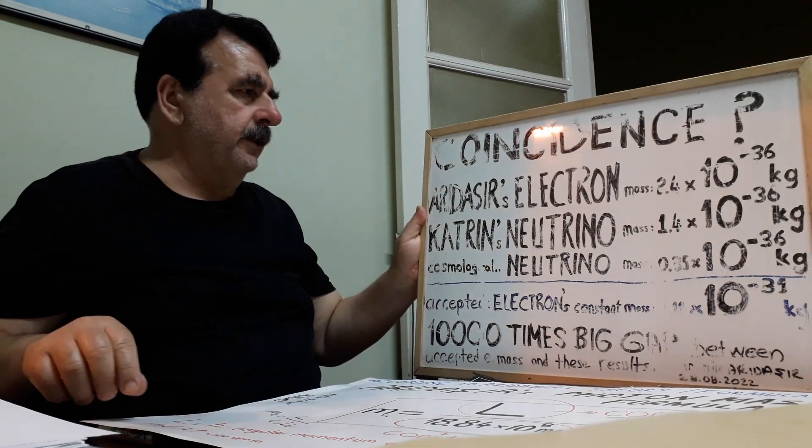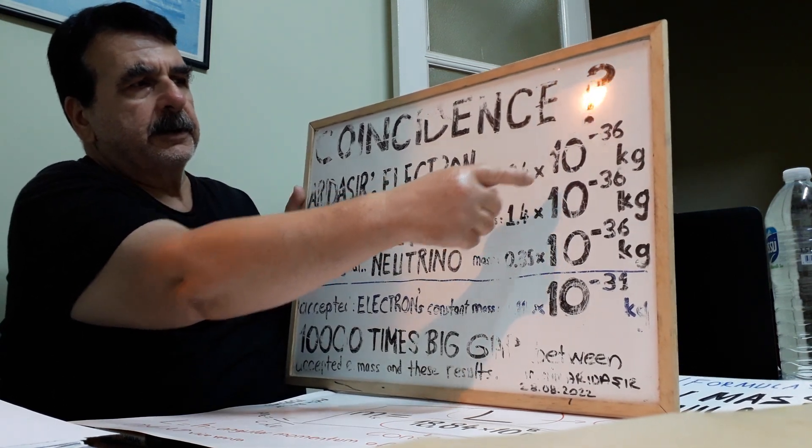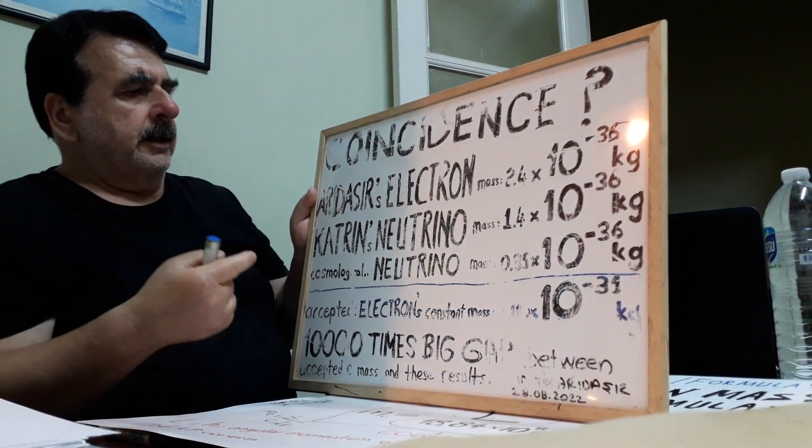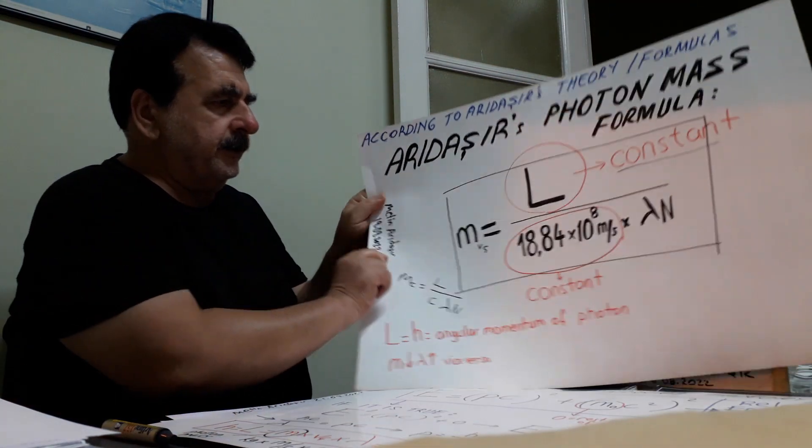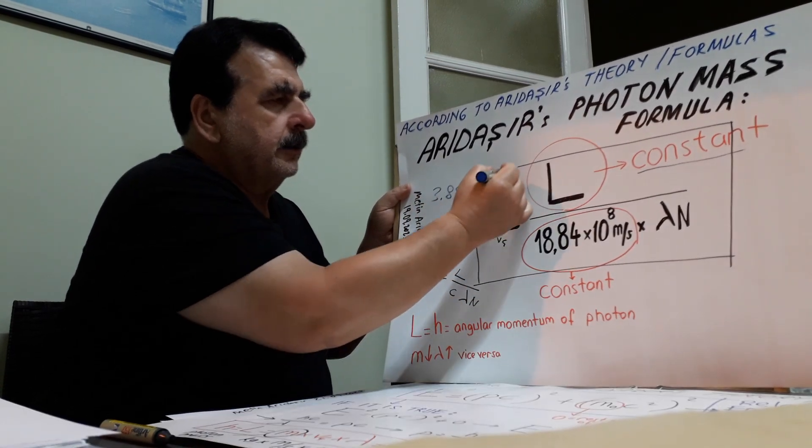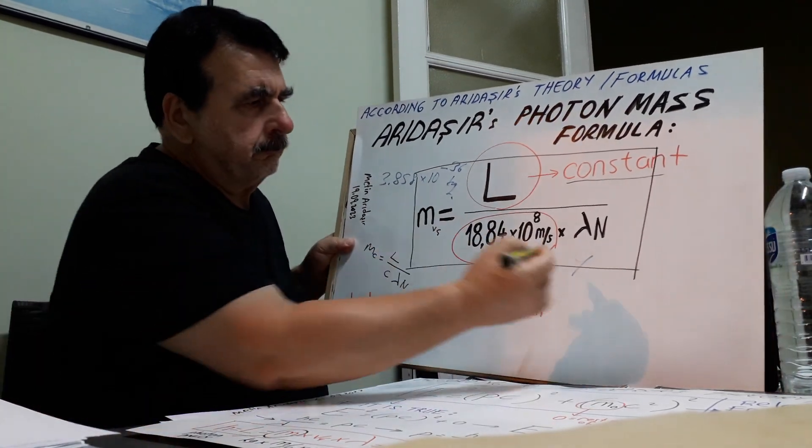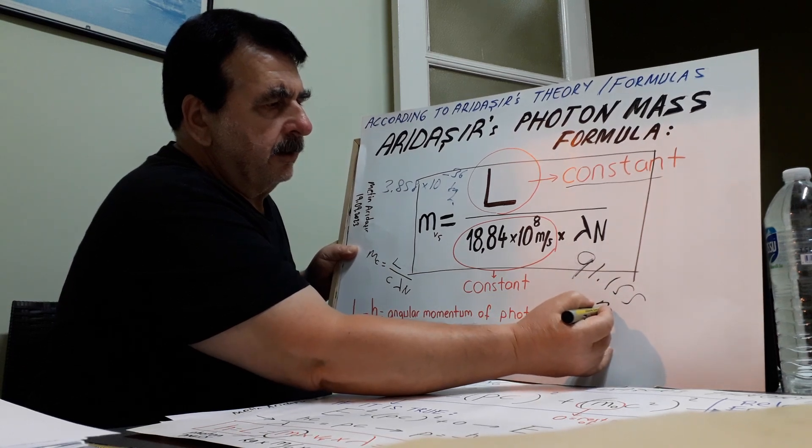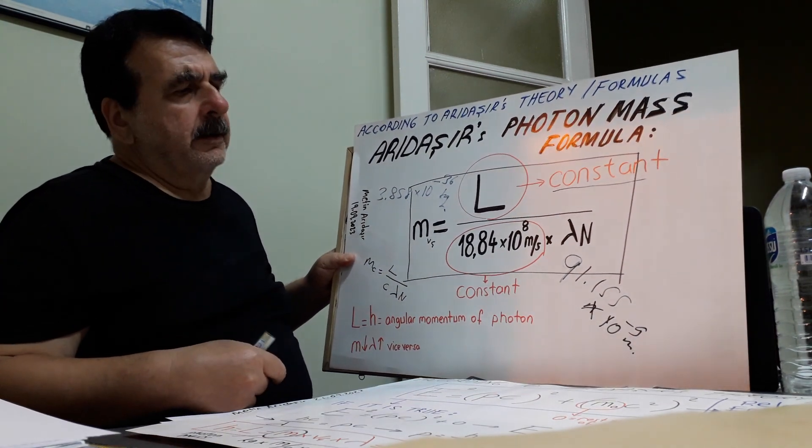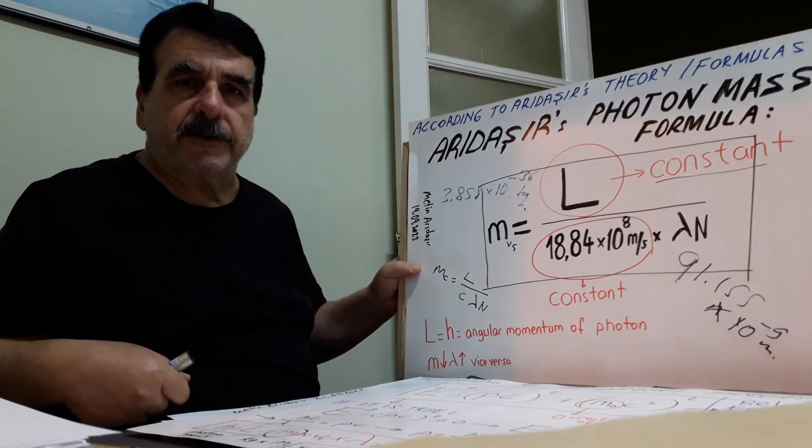From my former videos, this is c-direction photon mass, 2.42 times 10 to the minus 15 kilogram. Not 16. Then, in linear velocity component mass, 3.858 times 10 to the minus 36 kilogram, for a wavelength of 491.155 times 10 to the minus 9 meter or 491.155 nanometer wavelength size electron motion form.